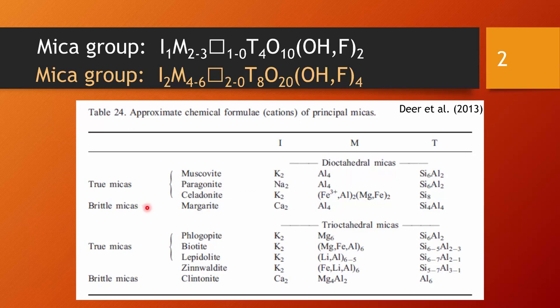So we have brittle micas here amongst the trioctahedral micas, clintonite, and dioctahedral micas, margarite. The substitution amongst the true micas in the dioctahedral group is quite obvious. Substitution of potassium and sodium is possible on the I position.